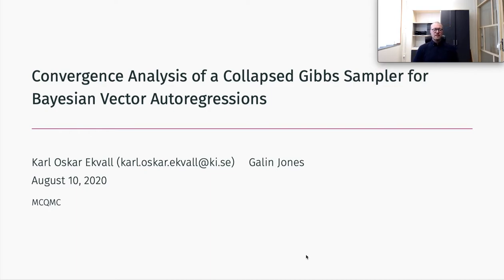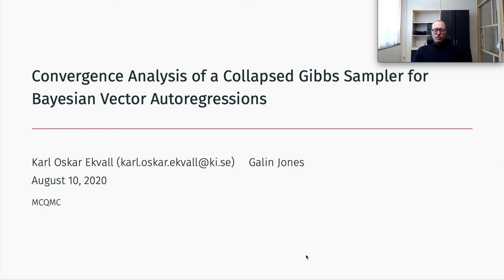I'm Karl Oskar Ekvall, a postdoctoral researcher at Karolinska Institute. Today I will talk about a project together with Galen Jones at the University of Minnesota. Our paper, which this talk is based on, is on convergence analysis of a collapsed Gibbs sampler that we propose for Bayesian vector autoregression with predictors.